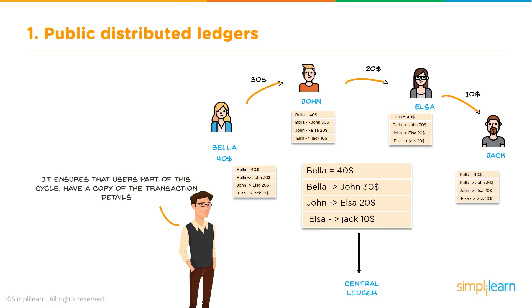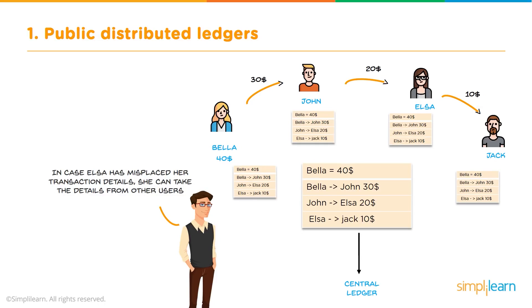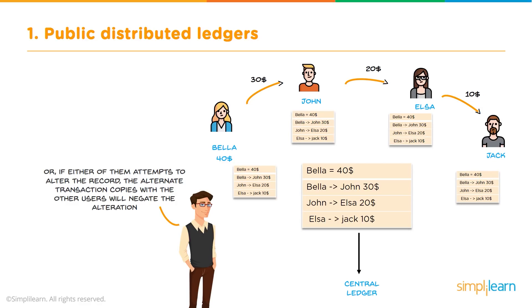It ensures that users part of this cycle have a copy of the transaction detail. Each user will have a copy of each transaction — Bella, John, Elsa, and Jack all have the same ledger, which is what is called a distributed ledger. In case one user like Elsa misplaces her transaction detail, she can easily be corrected by the other participants because they have the correct copy. If any participant attempts to alter the record, the other copies will negate the alteration, because if only one participant has a different copy, the others will rectify it.